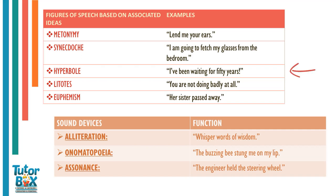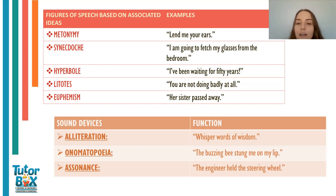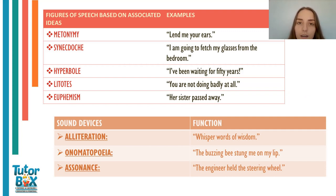For hyperbole, the example is 'I've been waiting for 50 years' — this is an exaggeration. The person has clearly not been waiting 50 years; it just means they've been waiting for a long time. The example of a litotes is 'you are not doing badly at all,' which means you're actually doing good, but it's understated — 'not doing badly' means you're doing well. For euphemism, the example is 'her sister passed away,' which is a less harsh way of saying her sister died.